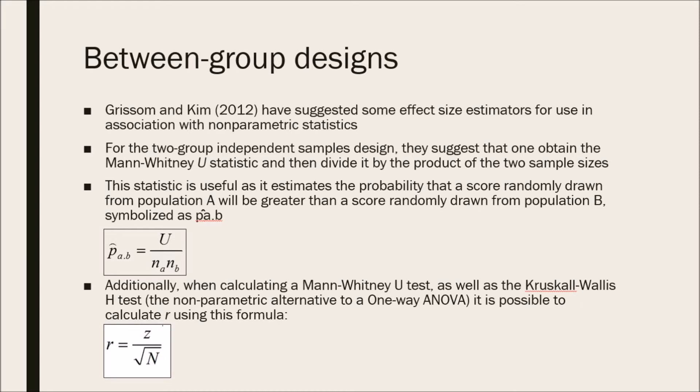This statistic is useful as it estimates the probability that a score randomly drawn from population A will be greater than a score randomly drawn from population B, and this was symbolized as P̂A.B. The formula for P̂A.B is simply U divided by the product of the one sample size for group A times the sample size of group B.